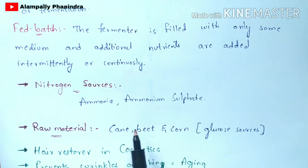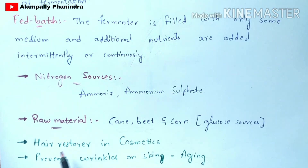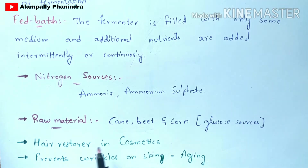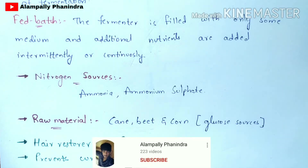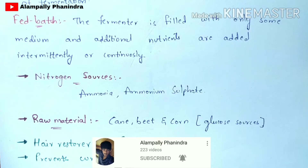The uses of glutamic acid include its use as a hair restorer in cosmetics — it prevents hair fall and promotes hair growth. It also helps in preventing wrinkles, thereby stopping the aging process.